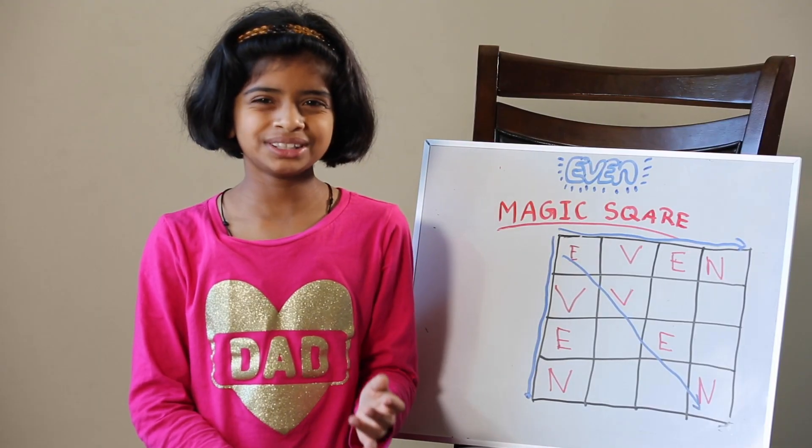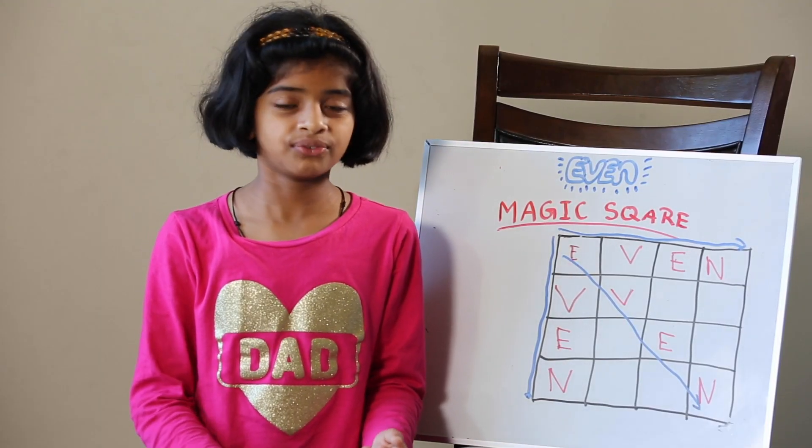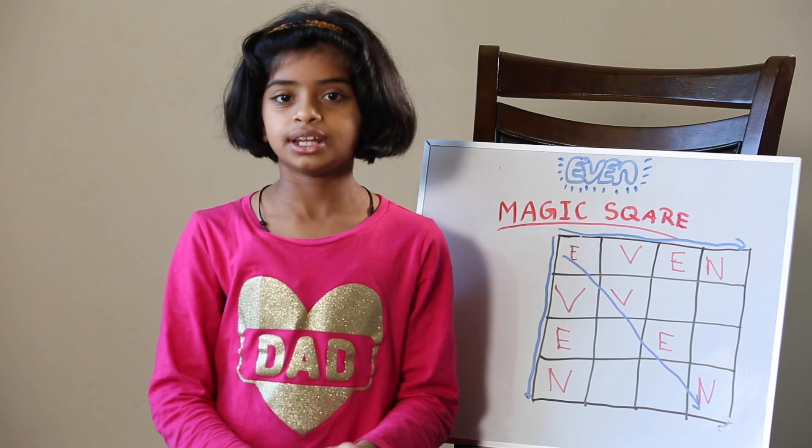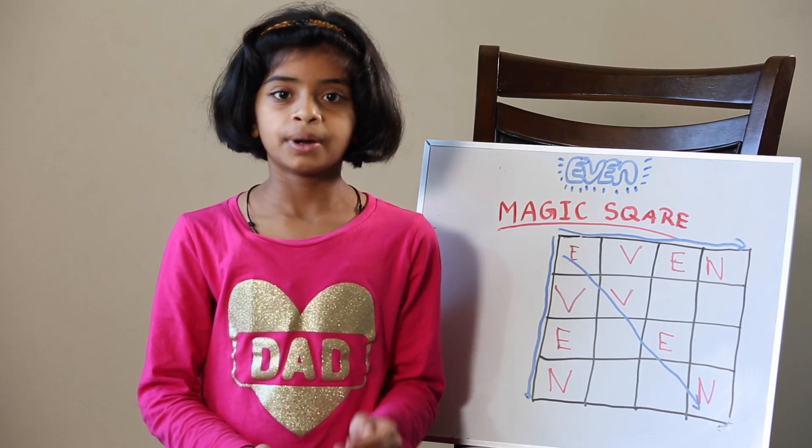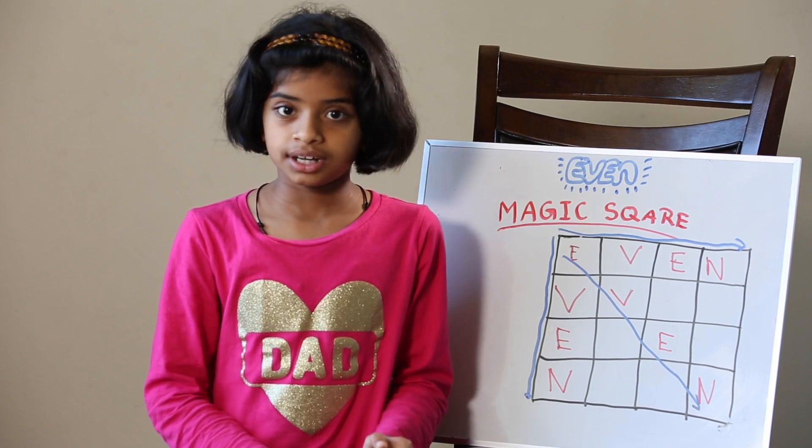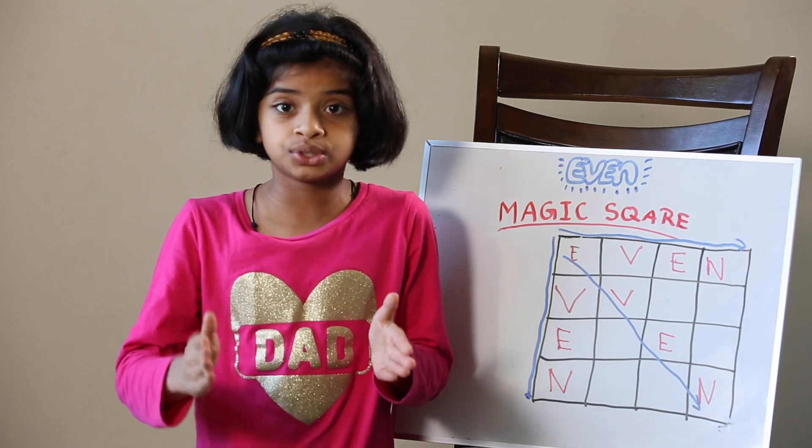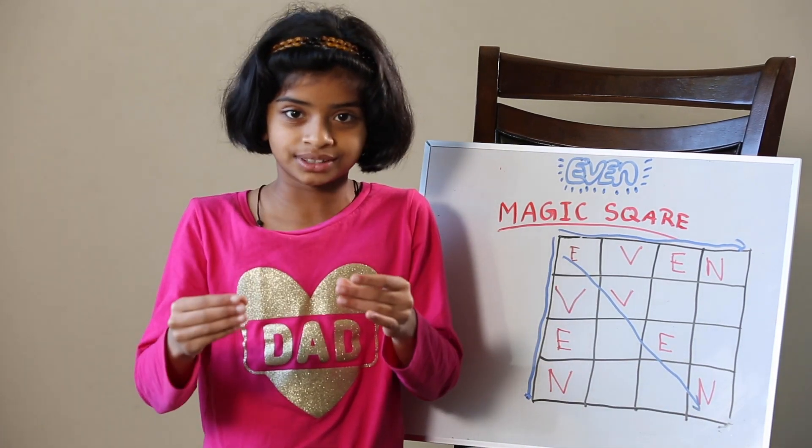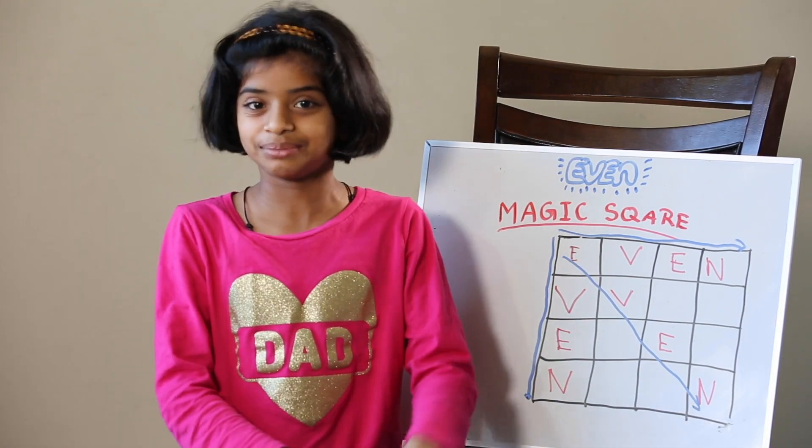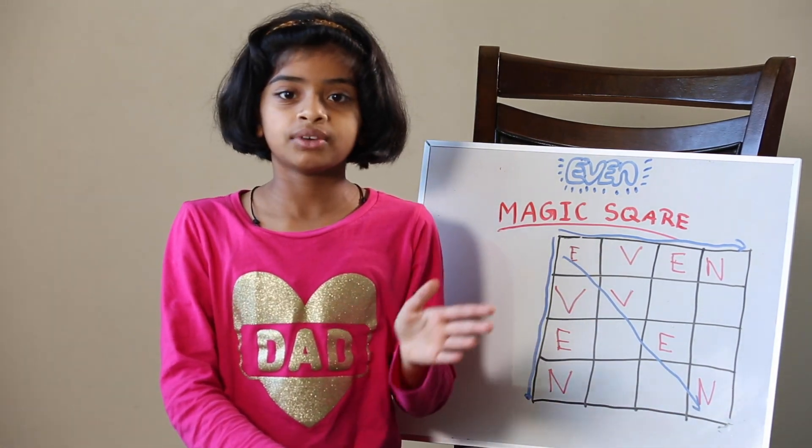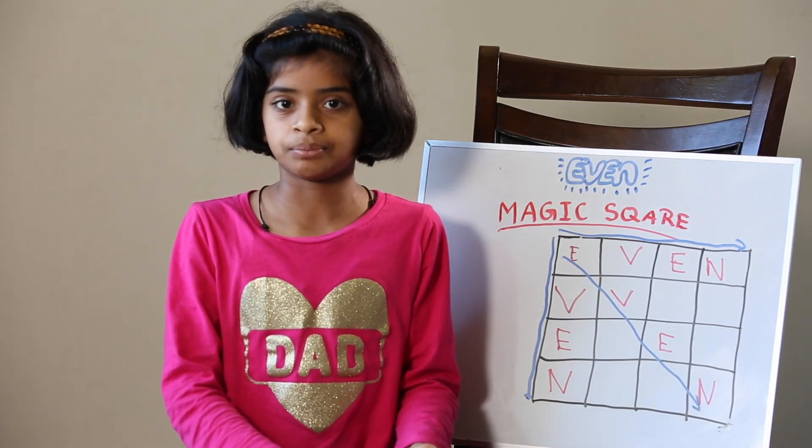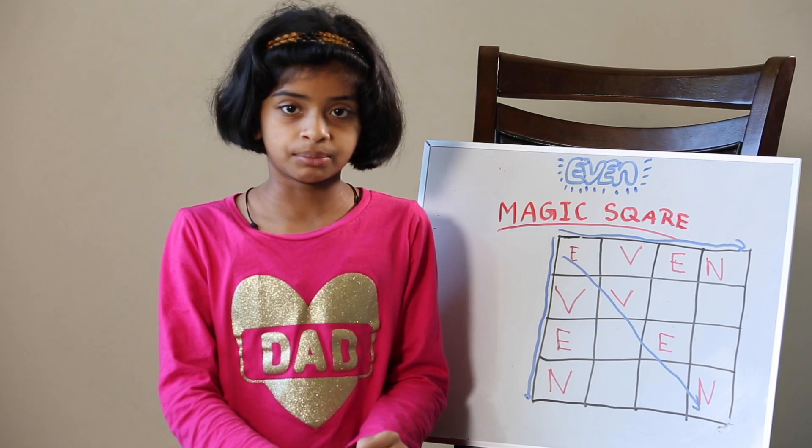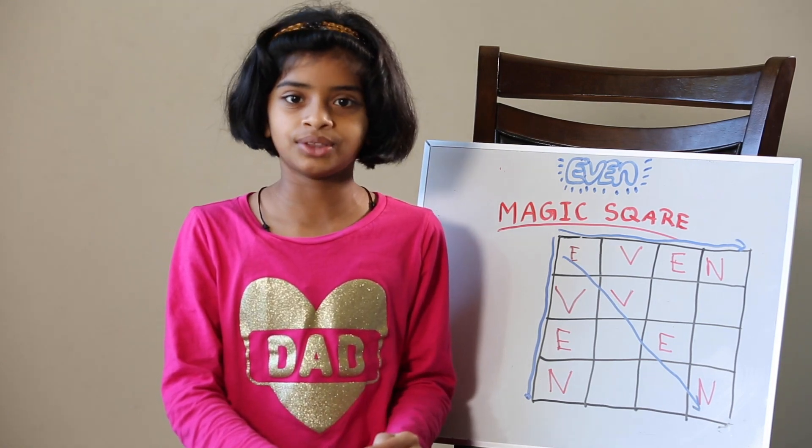You might be wondering what's a doubly even magic square in the first place? As you already know an even number is a multiple of 2, but a doubly even number is 2 times 2, which is why you call it doubly even. So 2 times 2 is 4, so any multiple of 4 will be a doubly even number. The first doubly even number is 4 so we're going to start with 4.